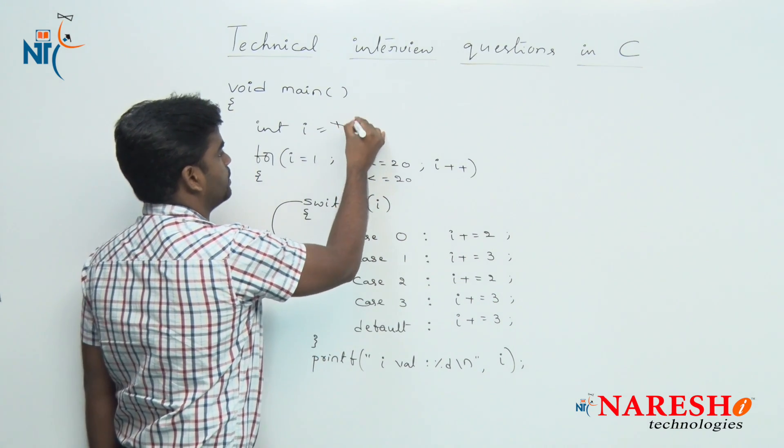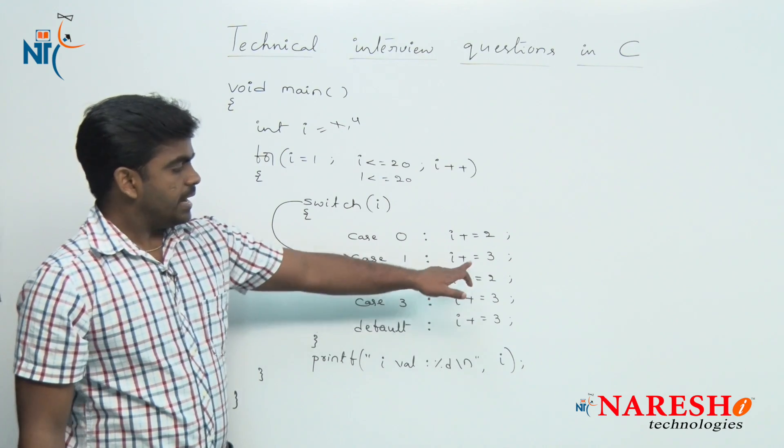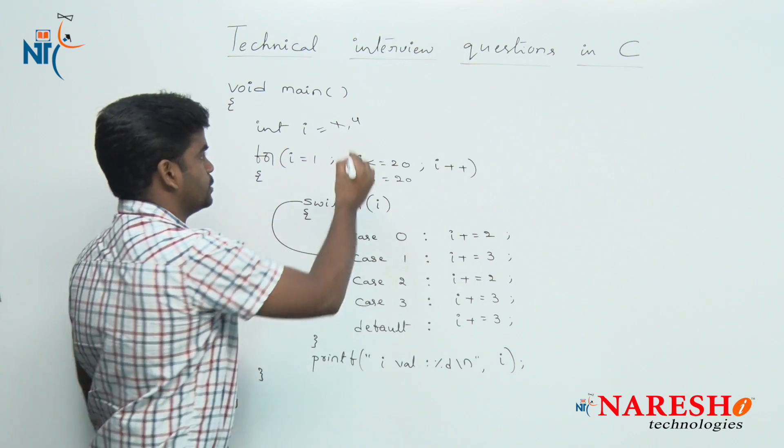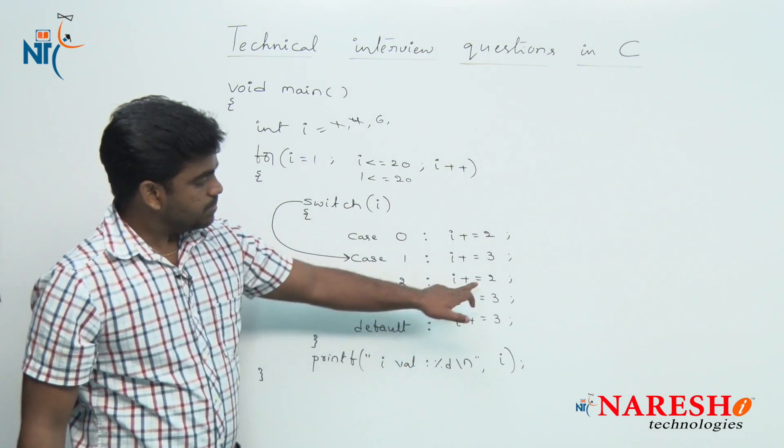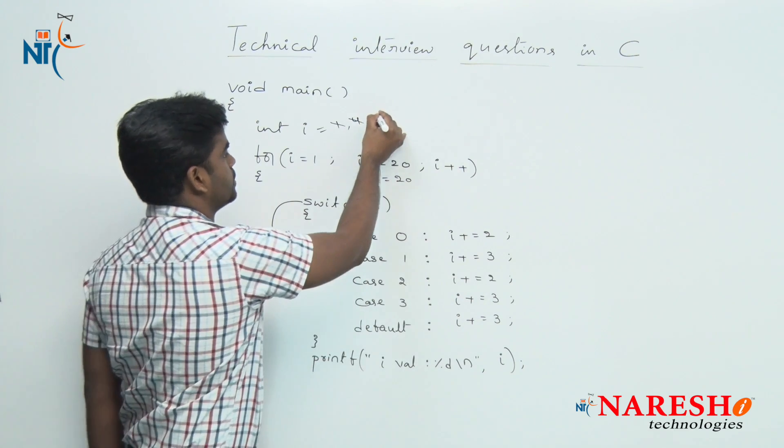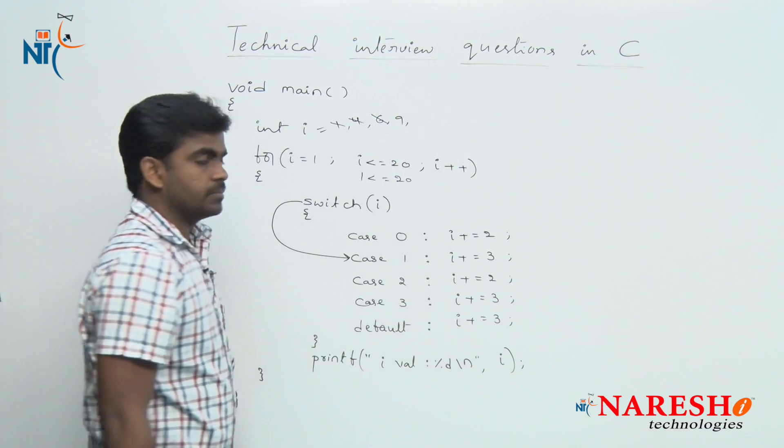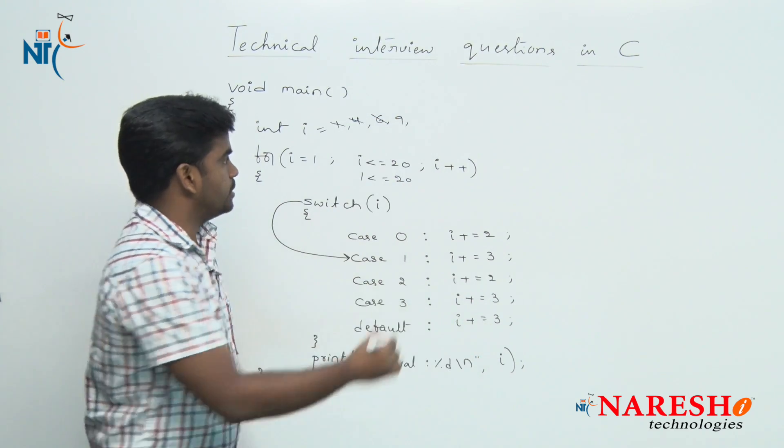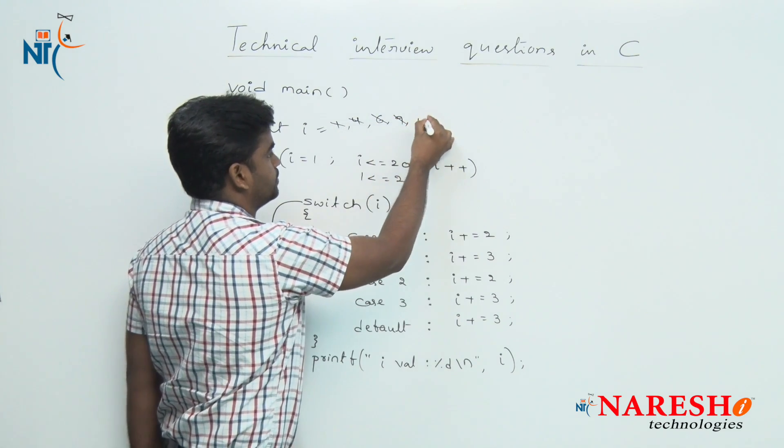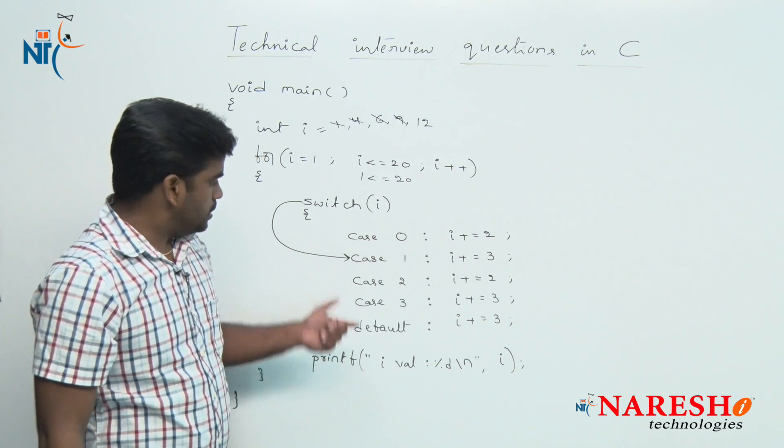Next, i plus equals 2, the value becomes 6. i plus equals 3, the value becomes 9. Next i plus equals 3, the value becomes 12.